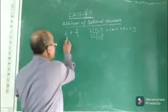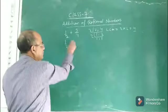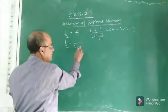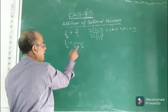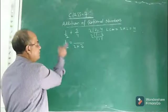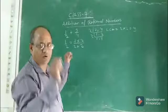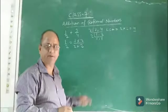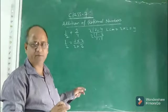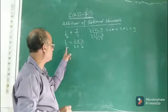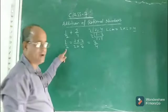Now, we have to make the denominator of 1 by 2 equal to 4. To do that, we multiply both numerator and denominator by 2. So 1 by 2 becomes 2 by 4. You know that if you multiply or divide the same positive or negative integer to both the numerator and denominator of a rational number, its value does not change. This has already been taught in junior classes. So 2 by 4 is the equivalent rational number of 1 by 2.